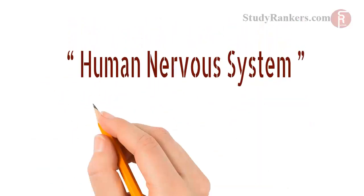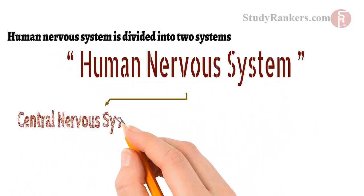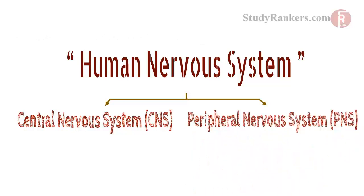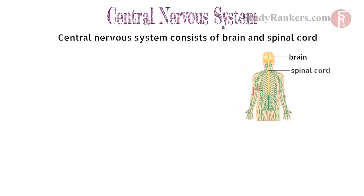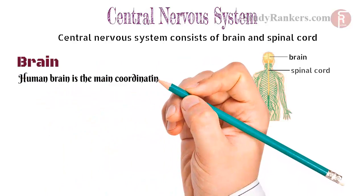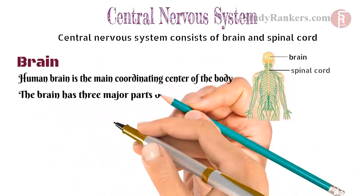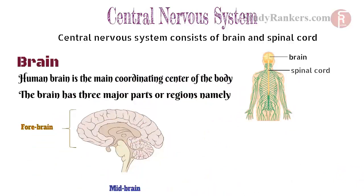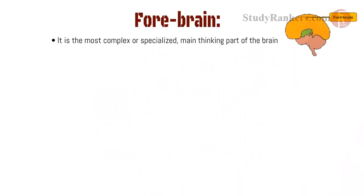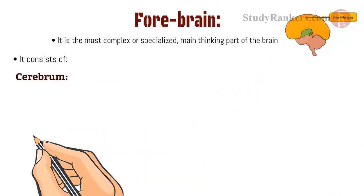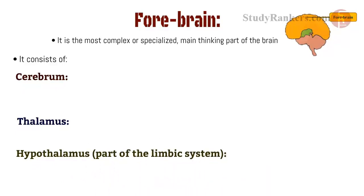We are going to learn about the human nervous system in detail. The human nervous system is divided into two systems: the central nervous system and the peripheral nervous system. The central nervous system consists of the brain and spinal cord. The human brain is the main coordinating center of the body. The brain has three major regions: the forebrain, midbrain and hindbrain. The forebrain is the most complex and specialized main thinking part of the brain. It consists of the cerebrum, thalamus, hypothalamus, and part of the limbic system.